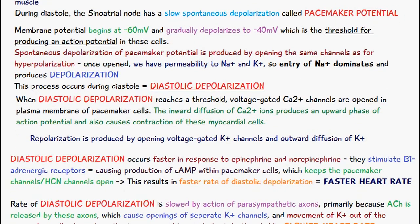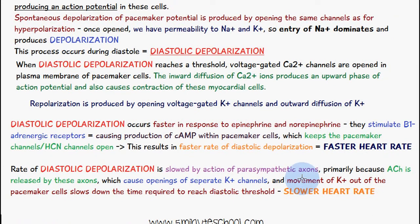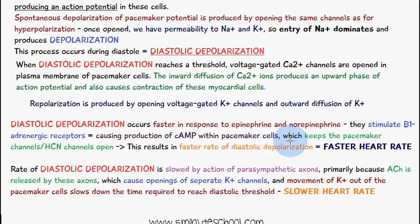Diastolic depolarization occurs faster in response to epinephrine and norepinephrine. They stimulate beta-1 adrenergic receptors, causing production of cyclic AMP within the pacemaker cells. This keeps the pacemaker channels — or HCN channels — open, resulting in a faster rate of diastolic depolarization and therefore a faster heart rate.